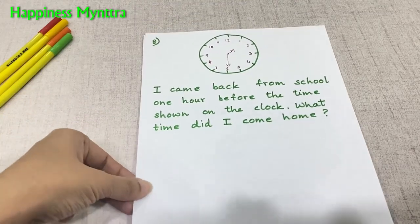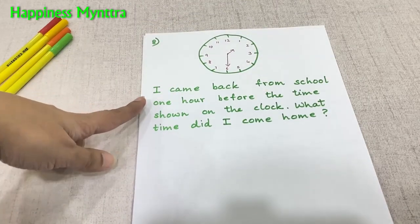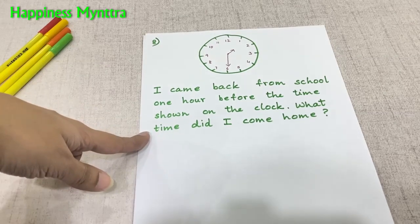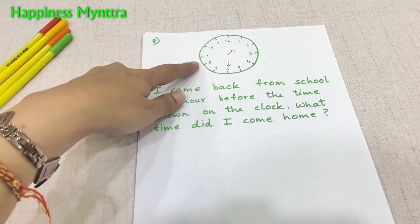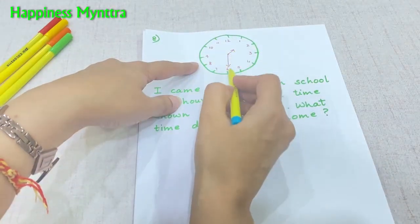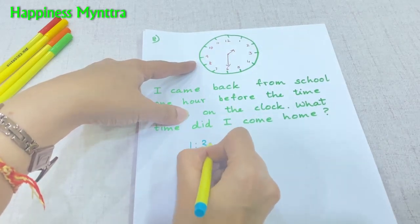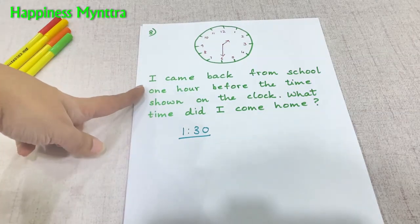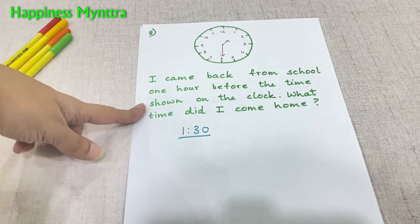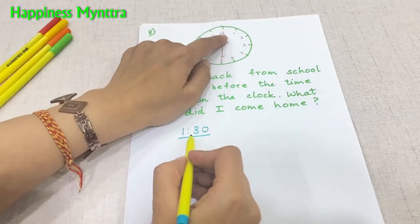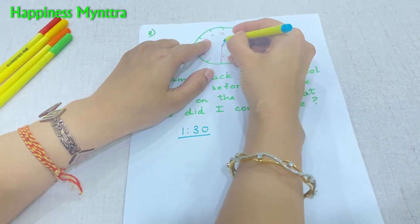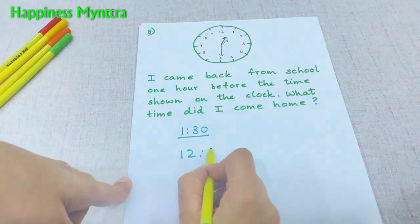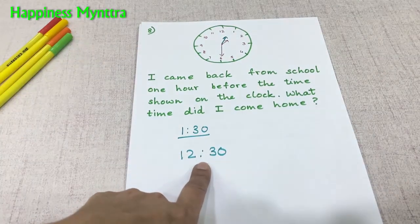Now a time-based question. I came back from school one hour before the time shown on the clock. What time did I come home? First let's figure out the time on the clock, which is 1:30. One hour before 1:30 means the time would be 12:30. So our answer is 12:30.